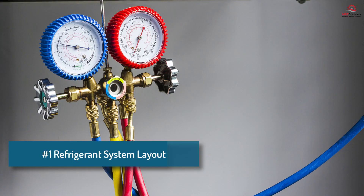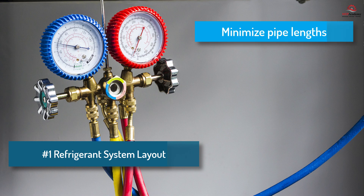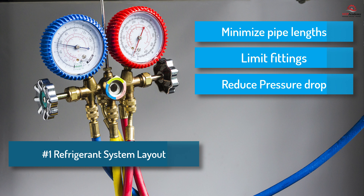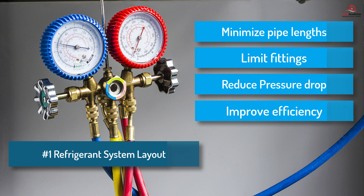1. Refrigerant system layout. The layout of the refrigerant system should be designed to minimize the length of the piping and the number of fittings and in-line components required. This reduces pressure drop in the system and helps improve efficiency. The total length of the refrigerant piping must not exceed the manufacturer's requirements, as this could result in a loss of capacity.